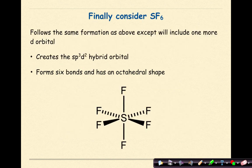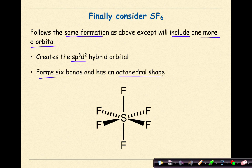Finally, consider SF6. Follows the same formation as above, except will include one more D orbital. This will create the SP3D2 hybrid orbital, forms six bonds, and has an octahedral shape.